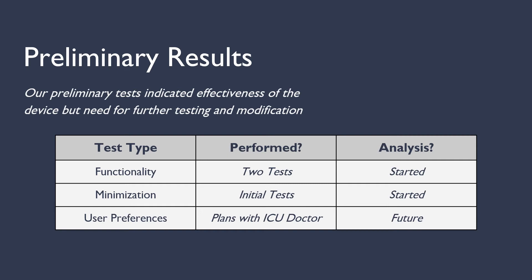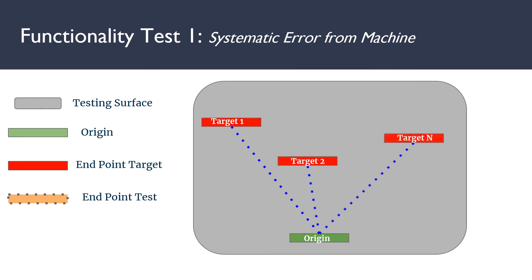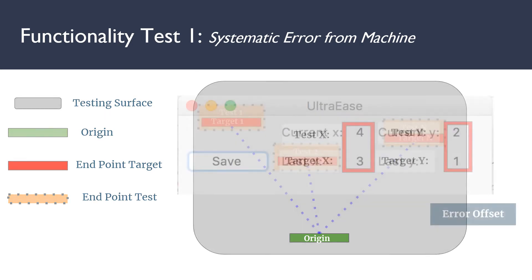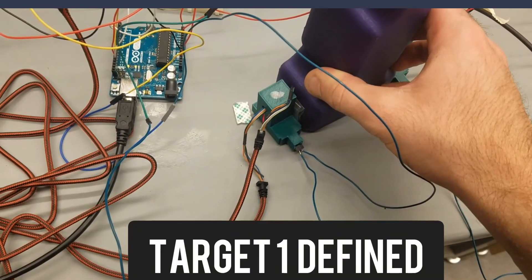These are the preliminary results of the UltraEase device. Our preliminary tests indicate effectiveness of the device, but also further need for modification. The three categories were functionality, where we performed two tests, minimization of the structure, where we started an initial test, and user preferences, which we planned with an ICU doctor. For Functionality Test 1, we measured the systematic error of the machine. We had a tabletop surface and an origin point, then dragged the UltraEase probe to various target points on the table marked with a piece of tape. For the test points, we brought the UltraEase probe back to the origin, then dragged the probe to the pieces of tape on the table, and looked at the offset between what the target was recorded initially and what the test showed when we revisited that point. This offset ideally should be zero.